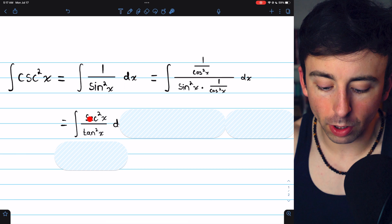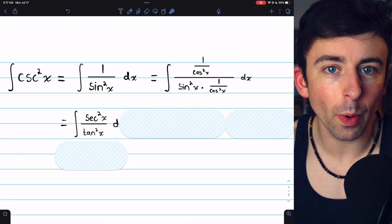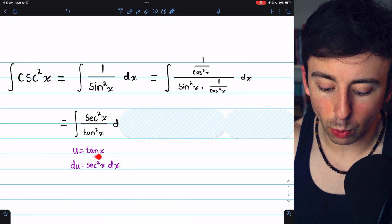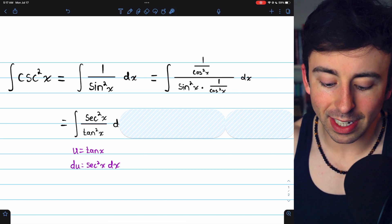So now we have the integral of secant squared over tangent squared, and now we can use u-substitution, because if we let u equal tangent of x, then in the denominator, we'll have u squared.